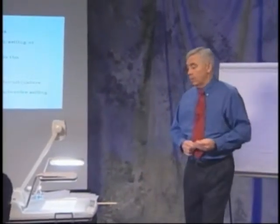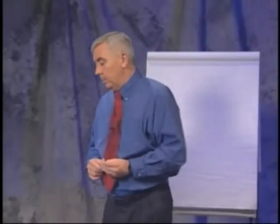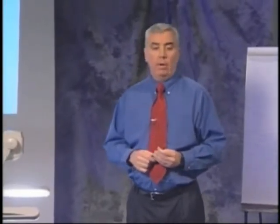If you sell an option, you have to have account approval from your broker to sell an option, and that usually requires a margin contract unless you're writing a covered call. A covered call trade doesn't require margin — you can do that in an IRA or retirement account. When you sell an option, your risk is unlimited, and you must have margin in your account to cover that risk. Most of the strategies we'll be discussing from the Guaranteed Real Income Program involve selling options, as opposed to buying options.